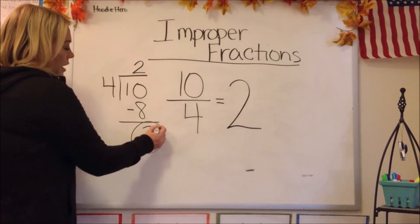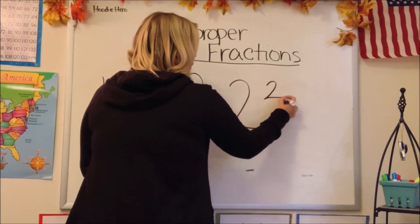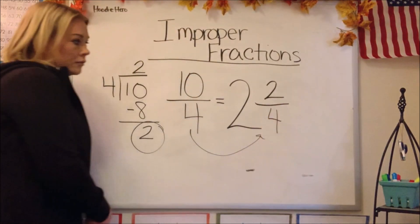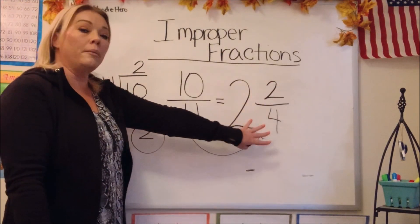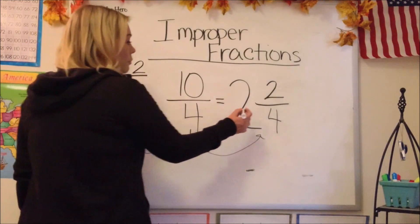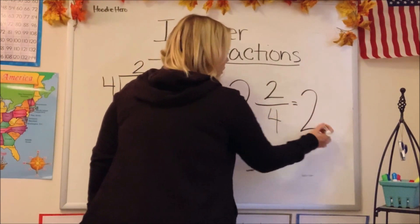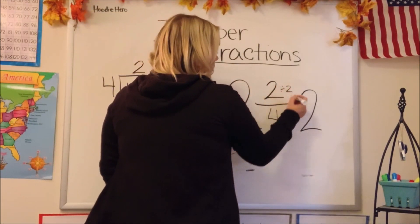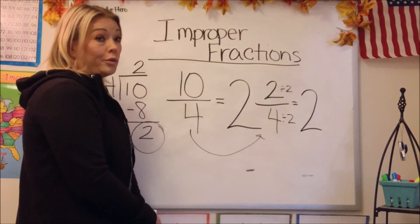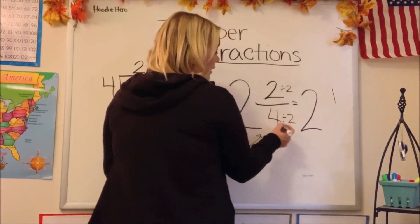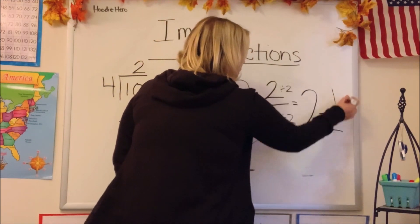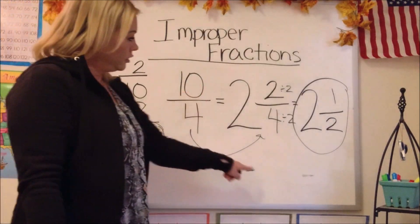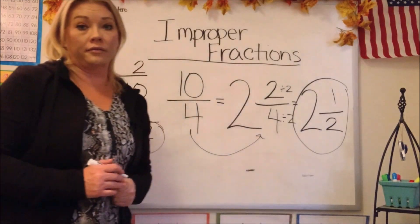We're going to take our remainder, 2, and that'll be our numerator. Then we keep the same denominator. So we have 2 and 2 fourths. Now, can we simplify this at all? We can't simplify the whole number, but we can simplify that fraction. We could simplify it by 2: 2 divided by 2 is 1, and 4 divided by 2 is 2. So 10 fourths turns into 2 and 1 half.